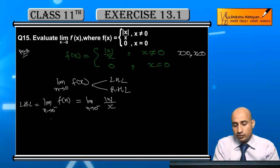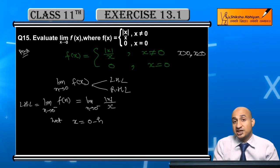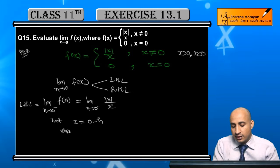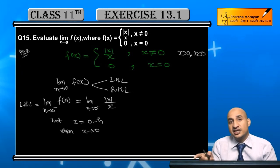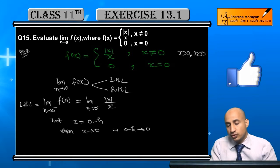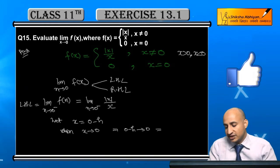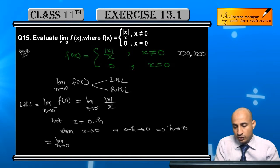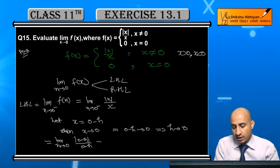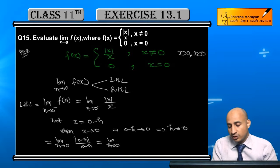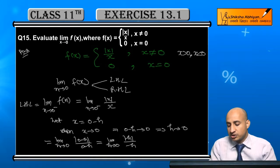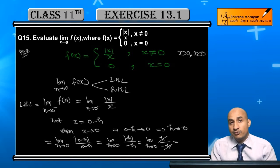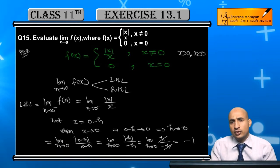Now, let x equal to 0 minus h. When x tends to 0 minus, then 0 minus h also tends to 0, which implies h also tends to 0. This becomes limit h tends to 0 of modulus of (0 minus h) upon (0 minus h), which is modulus of (minus h) upon (minus h). Since modulus of minus h is h, this gives h upon minus h, which equals minus 1. So the left-hand limit is minus 1.